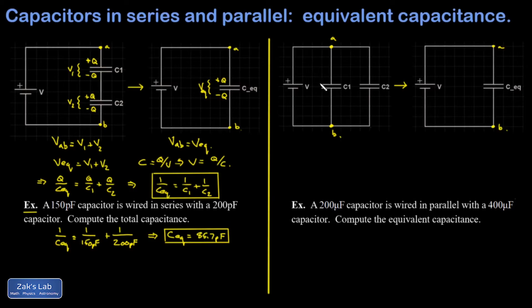Now the thing that stays the same for each capacitor this time is not the charge, but the potential difference. Each of those capacitors is directly connected to the high and low side of the battery. So each one's going to have that same potential difference of V.